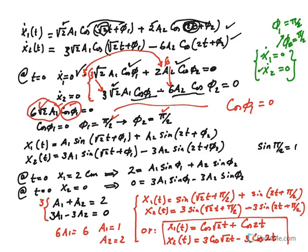Now, since both phase angles are 90°, I rewrite the displacement equations with φ1 = φ2 = 90° and apply the displacement initial conditions. At t = 0: x1 = 2, so a1·sin(90°) + a2·sin(90°) = 2, which gives a1 + a2 = 2. For x2 = 0 at t = 0: 3a1 − 3a2 = 0.